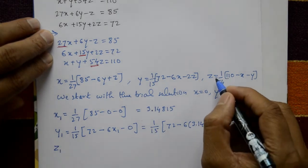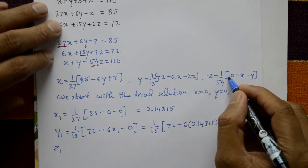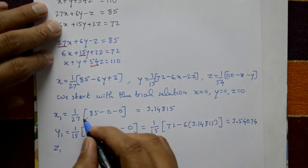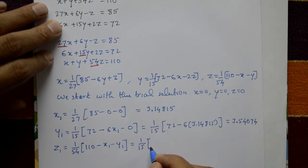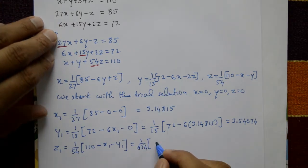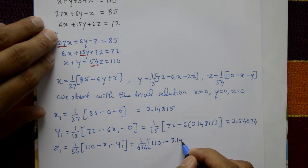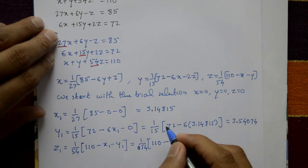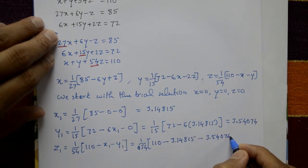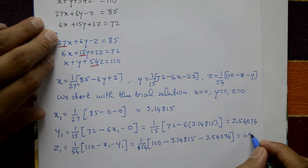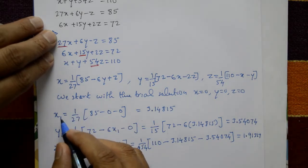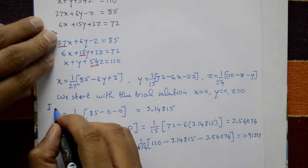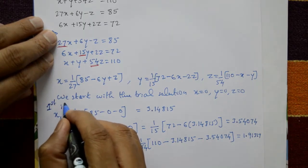Now calculate z1. Use the updated x1 and y1 values immediately: z1 = (1/54)(110 − x1 − y1) = (1/54)(110 − 3.14815 − 3.54074) = 1.91317. So after the first iteration: x1 = 3.14815, y1 = 3.54074, z1 = 1.91317.